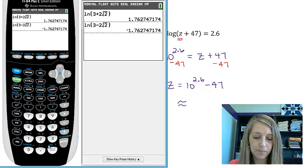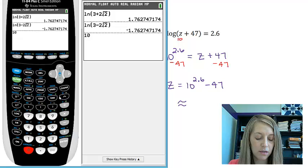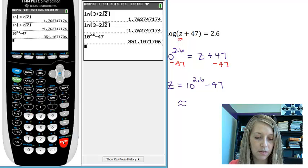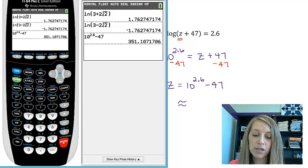If I approximate that, 10 to the 2.6 minus 47, my solution is 351.107.